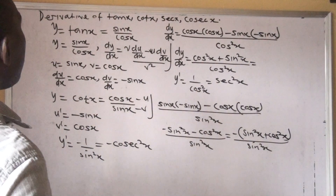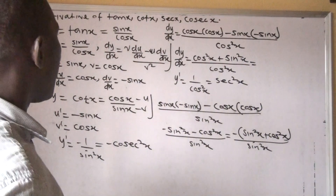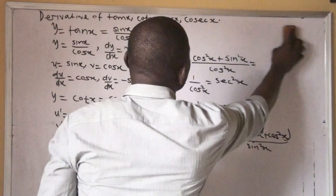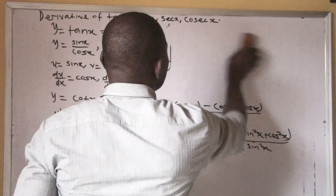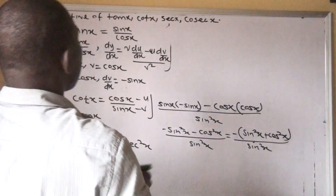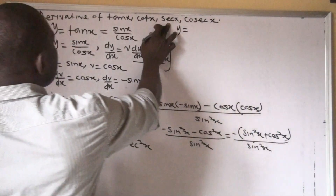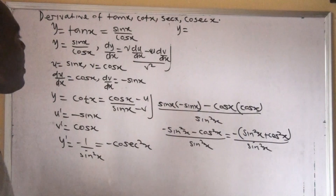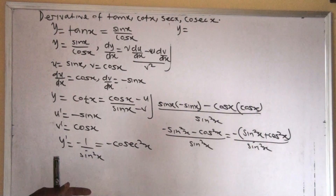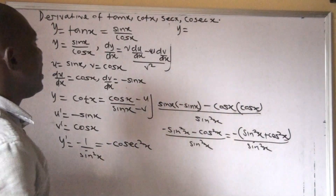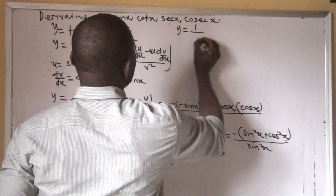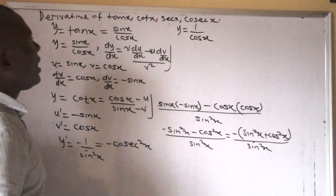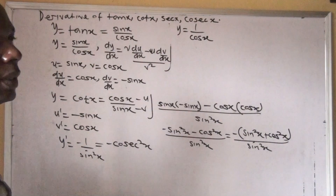Now let's find the derivative of sec x. The first thing we look at is what sec x represents. Sec simply means the inverse of cos — the equivalent of sec x is 1 over cos x. So we also apply the quotient rule here, because we have a quotient.